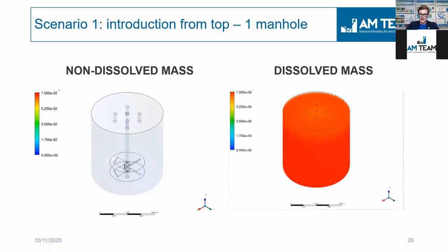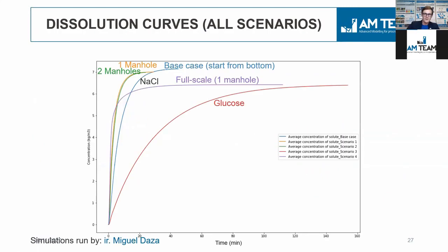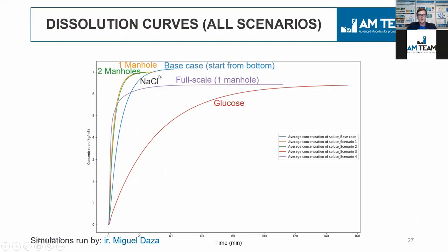If you change the impeller diameter or scale, things will of course look very different. Looking at all scenarios together, the biggest difference — as expected — is between glucose and sodium chloride: glucose takes much longer to completely dissolve compared to sodium chloride. Within the sodium chloride scenarios, there is quite a difference between the full 1,000-liter scale and the smaller 50-liter scale. You should compare the full-scale one-manhole curve with the orange 50-liter one-manhole curve. The impact of scale, components, and temperature changes would all drastically affect the dissolution behavior.